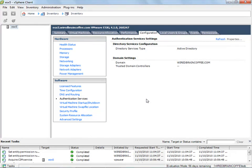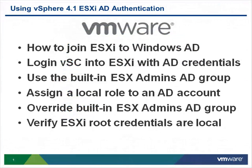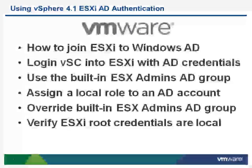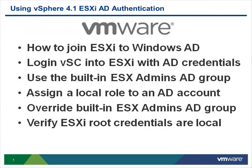So with that let's go back to our slides. I just showed you how to assign a local role to an Active Directory account. Now let's move on to how to override the built-in ESX admins Active Directory group. There may be some admins concerned about this built-in ESX admins group, because any person who creates that group in Windows Active Directory and puts themselves in it suddenly has administrative access to an ESX server. So let's say we didn't want to use that built-in group at all, and perhaps wanted to add individual users or not even use Active Directory authentication, but still have our ESXi server be a member of the Windows Active Directory.